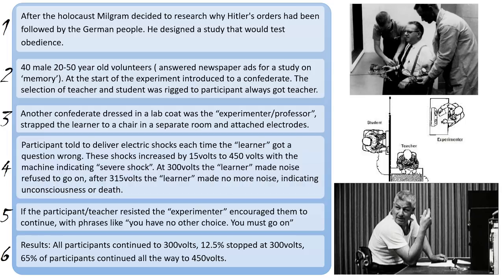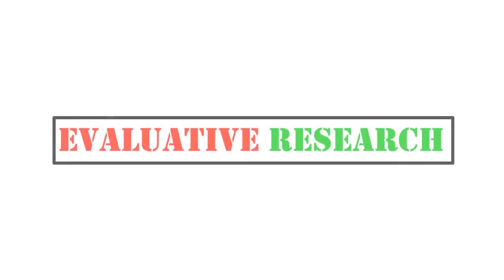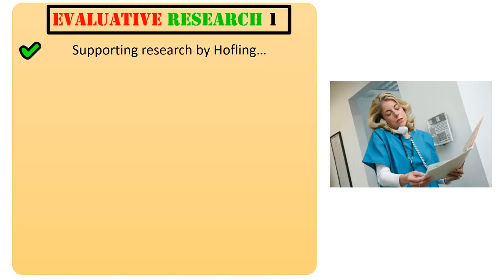So what did we find? Every single participant continued up to 300 volts, despite the loud shouts of pain from the other room. Only 12.5% of participants stopped at 300 volts, the point where the learner had refused to continue. The large majority — about two thirds of participants — continued all the way to 450 volts, the point where it said 'severe shock'. These results demonstrated that the Germans weren't a particularly different group of people; Milgram found that Americans were just as likely to follow extreme orders. And this research had a big impact in the area of social influence.